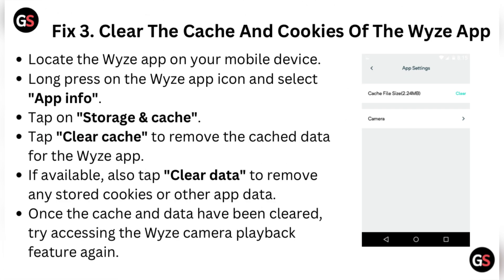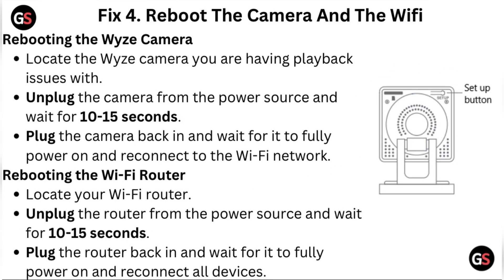Fix three: clear the cache and cookies of the Wyze app. Locate the Wyze app on your mobile device, long press on the app icon, and select App Info. Tap on Storage and Cache, then tap Clear Cache to remove the cache data. If available, also tap Clear Data to remove any stored cookies or other app data. Once cleared, try accessing the Wyze camera playback feature again.